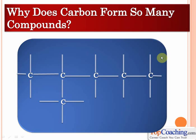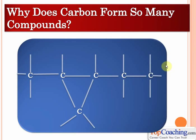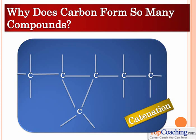What is catenation? Catenation is the ability of carbon to form carbon-carbon chains. This carbon atom on the left is attached to another carbon atom, which is attached to another, which is attached to yet another. In this manner, carbon atoms can be attached to one another to form chains which have hundreds or even thousands of carbon atoms. Carbon has this special ability to form carbon-carbon chains which go on and on, and that is one important reason why carbon forms so many compounds.